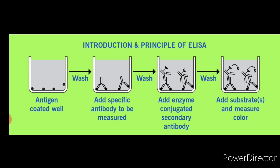These assays approach the sensitivity of RIA — that is, radioimmunoassay — and have the advantage of being safer and less costly. A number of variations of ELISA have been developed, allowing qualitative detection or quantitative measurement of either antigen or antibody. Each type of ELISA can be used qualitatively to detect the presence of antibody or antigen, or alternatively a standard curve based on known concentrations can be prepared to determine unknown sample concentrations.